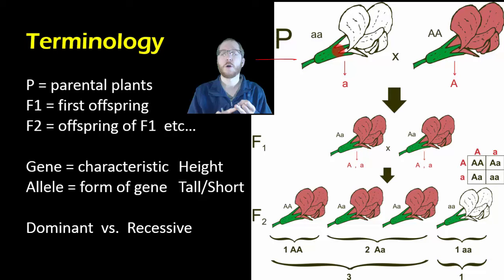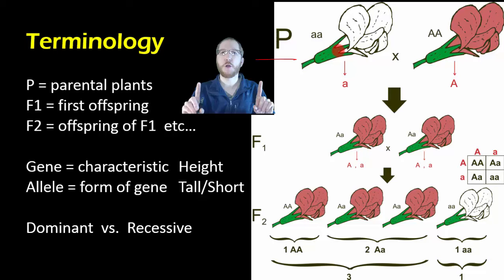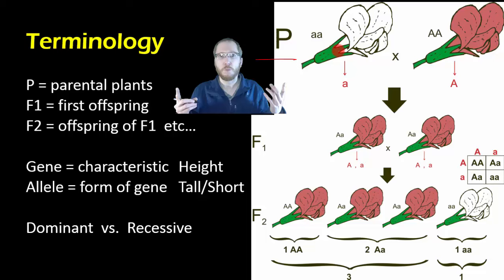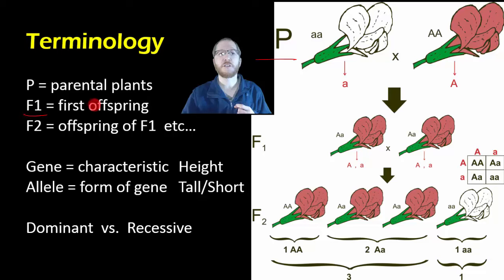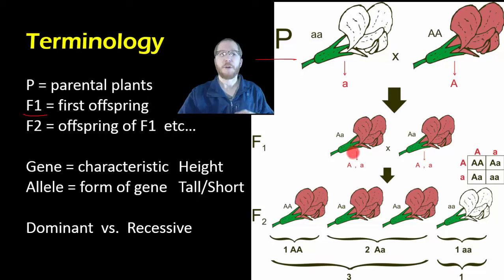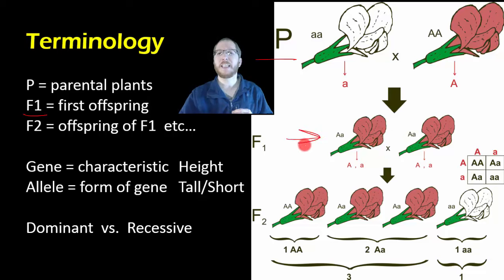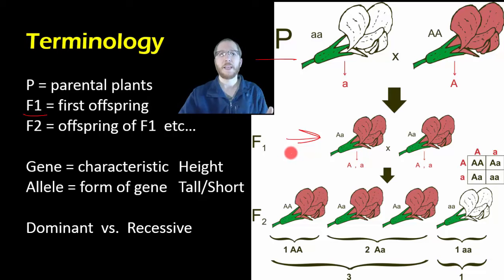For traits like white flowers or purple flowers, he would get true breeding plants for each version. He then asked: what happens if I cross two different pure breeding plants? If I cross a white flower and a purple flower, what will I get? He did that and got his F1 generation — the first filial, the first set of offspring, essentially the children. What he found in most cases was that all of them looked like one of the parents — in this case, they all had purple flowers.